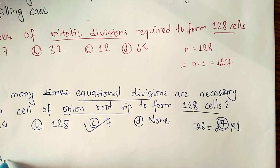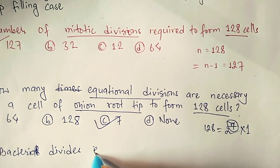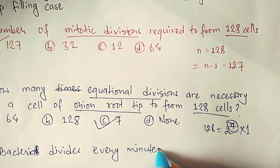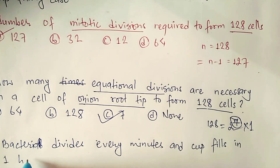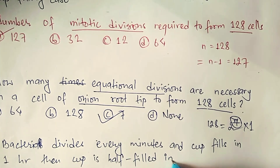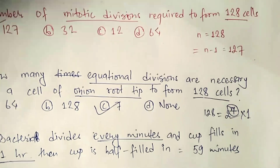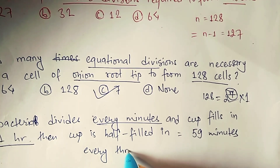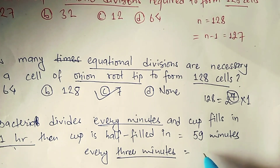Now the third pattern — the cup back problem. A cell divides every minute and the cup fills in one hour. The cup will be half-full one minute before, so the answer is 60 minus 1 equals 59 minutes. If the cell divides every three minutes, then you subtract three minutes from one hour: 60 minus 3 equals 57 minutes.